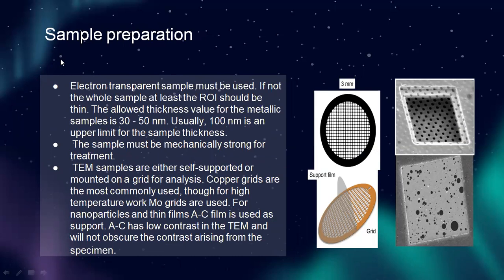Next, I will discuss sample preparation for transmission electron microscope. Electron-transparent samples must be used; if not the whole sample, at least the region of interest should be thin. The allowed thickness for metallic samples is 30 to 50 nanometers. Usually 100 nanometers is an upper limit for sample thickness. The sample must be mechanically strong for treatment. TEM samples are either self-supported or mounted on a grid for analysis. Copper grids are most commonly used; for high temperature work, Mo grids are used. For nanoparticles and thin filaments, an amorphous carbon film is used as support due to its low contrast in TEM, so it will not obscure the contrast arising from the specimen.